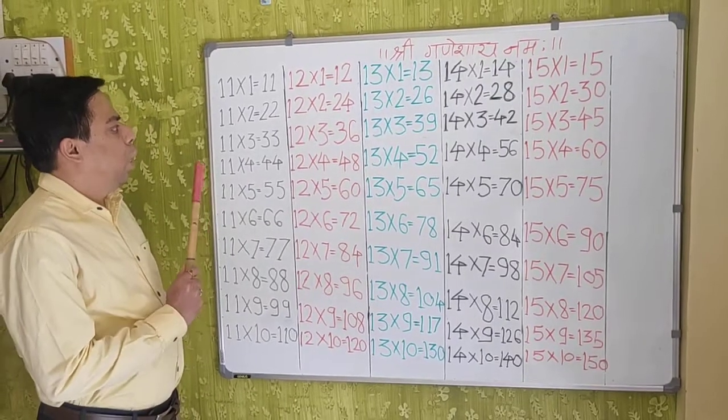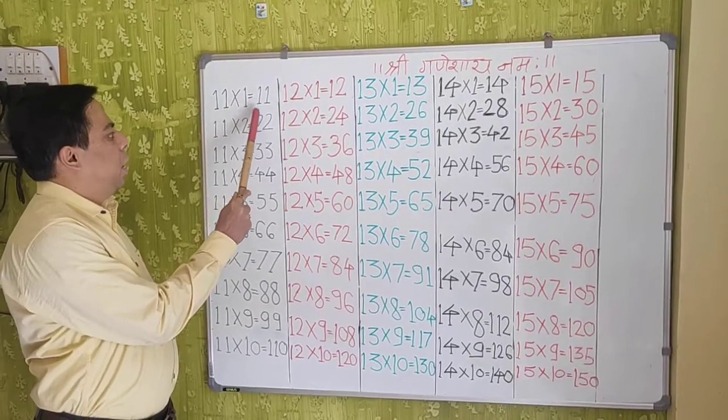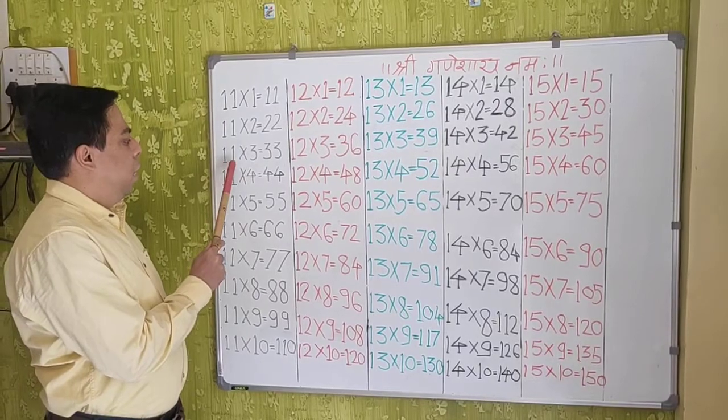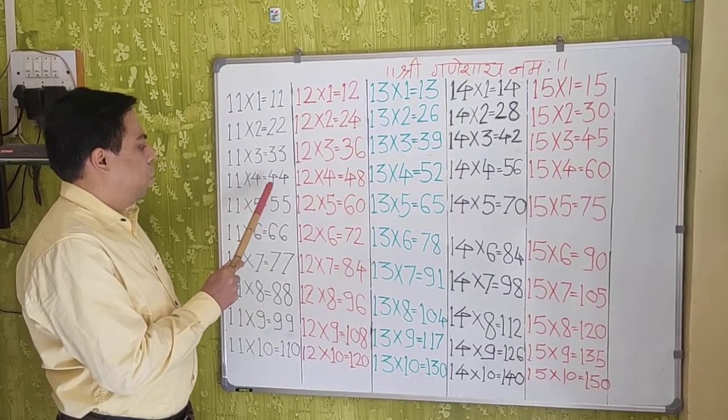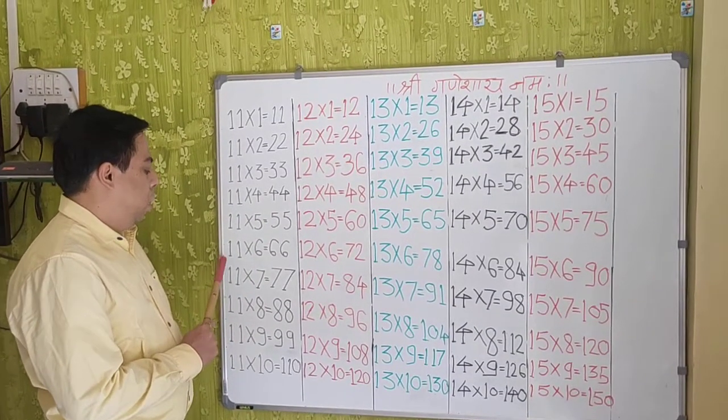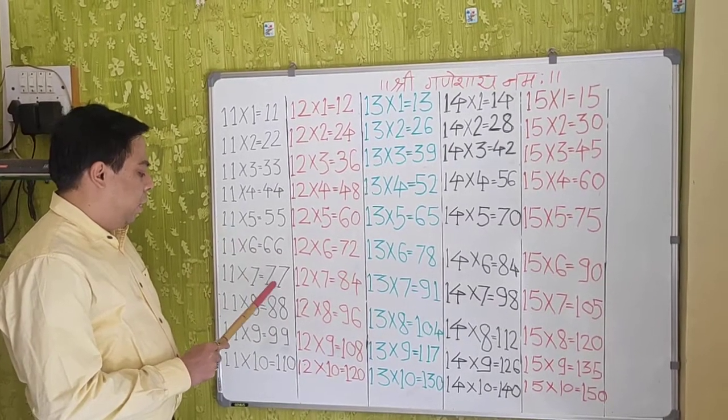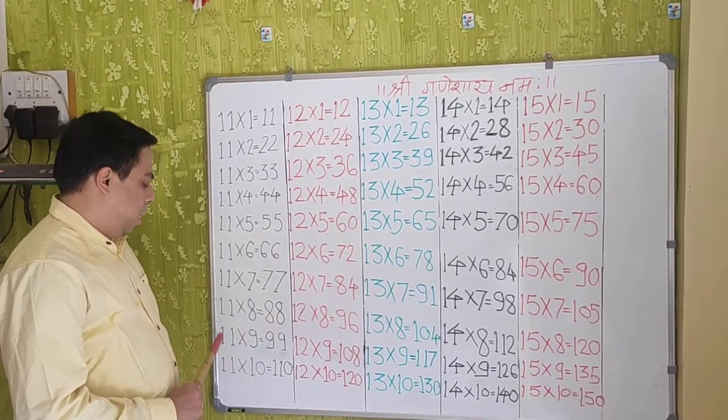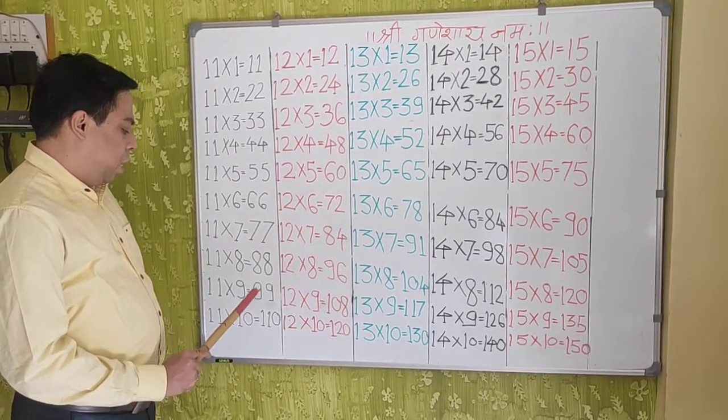Good afternoon students, we are going to learn tables. 11×9=99, 11×10=110.